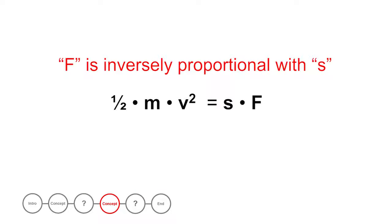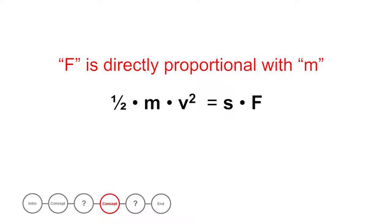The force is inversely proportional with the distance. Imagine that the mass and the velocity do not change. When you double the distance, the force becomes half as much. When the distance is tripled, the force has to be divided by 3, and so on. The force is directly proportional with the mass. Imagine that the velocity and the distance do not change. When you double the mass, the force doubles too. When mass is tripled, the force will be tripled too.